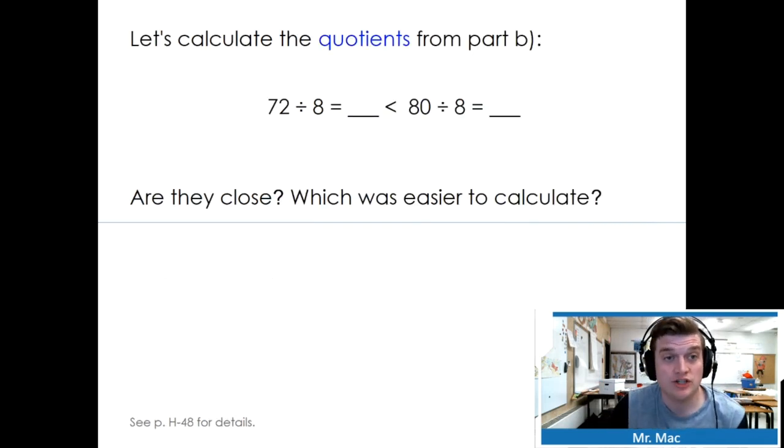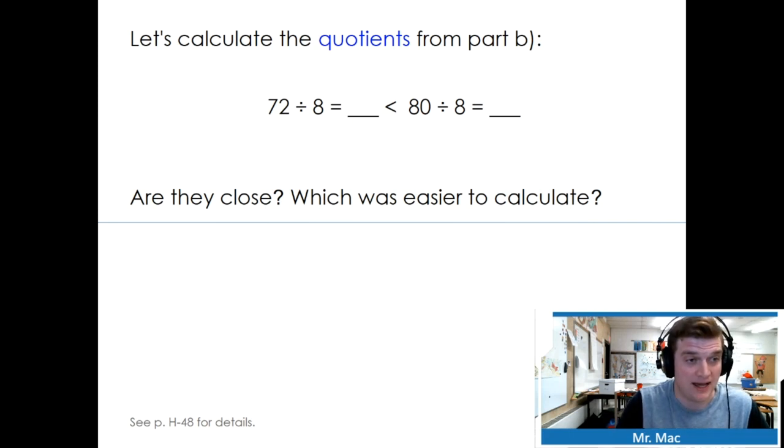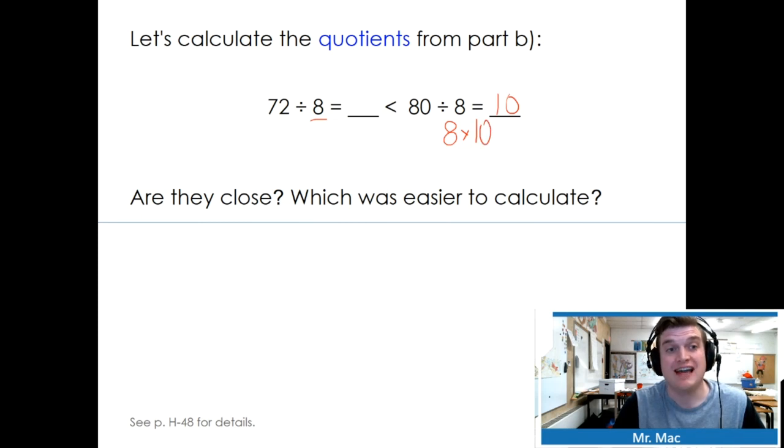Let's calculate the quotients from part B. 72 divided by 8 equals... 80 divided by 8 equals... 72 is less than 80. I agree. Now let's find the quotient. We're going to need to skip count by 8s to find this answer. Now we know from practice that 80 divided by 8 just equals 10. If you think about this as a multiplication question, 8 times 10 equals 80.